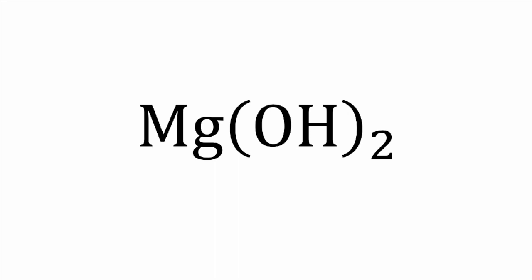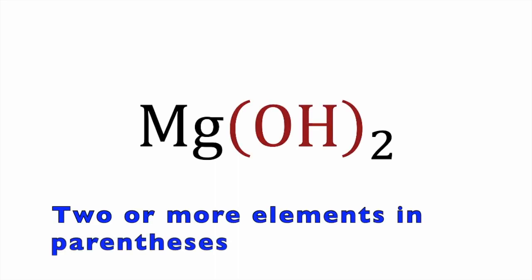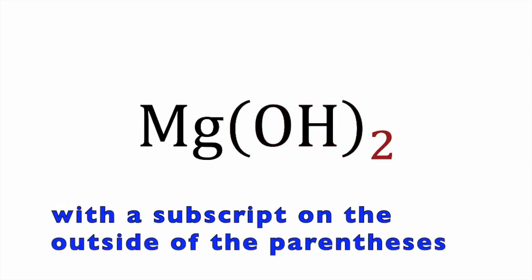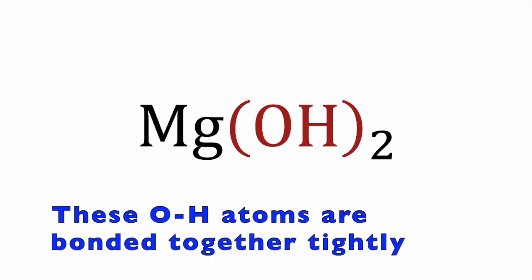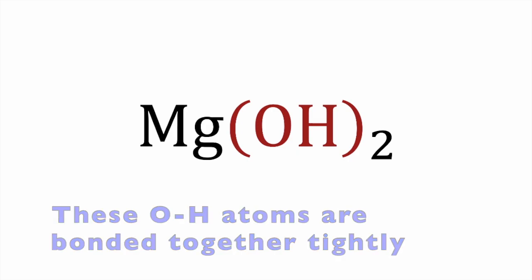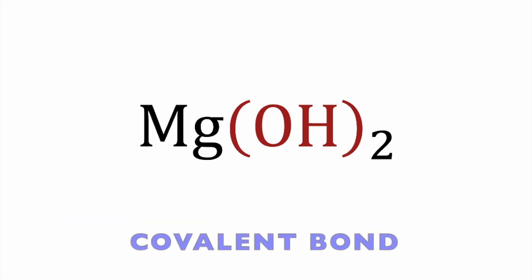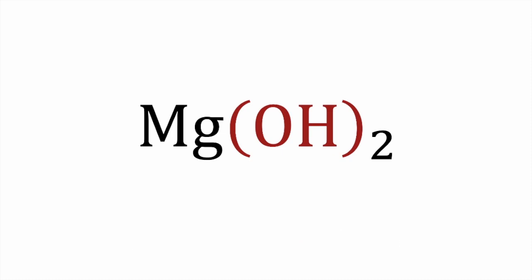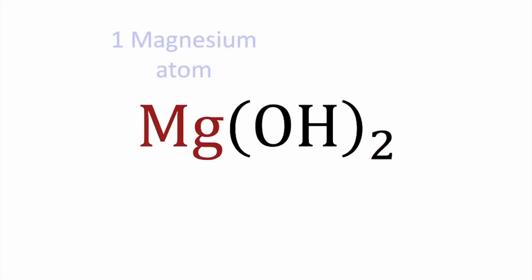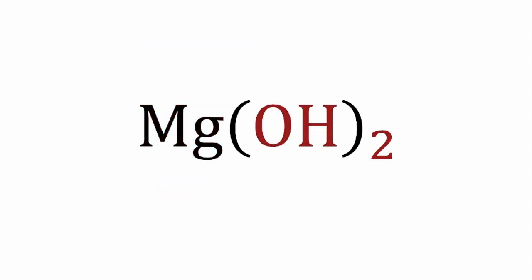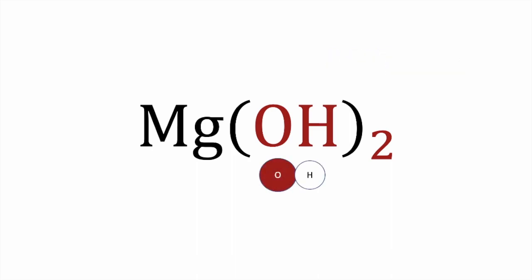Often you will see chemical formulas where two or more elements are in parentheses with a subscript on the outside. The reason the OH is in parentheses is because these atoms are bonded together tightly as a group. The type of bond that bonds them is called a covalent bond, and you will be learning more about these later. The subscripts outside these groups in parentheses tell us how many groups of those atoms we have. In the magnesium hydroxide example, we have one magnesium, because there's no subscript next to it. We call this particular group a hydroxyl group.